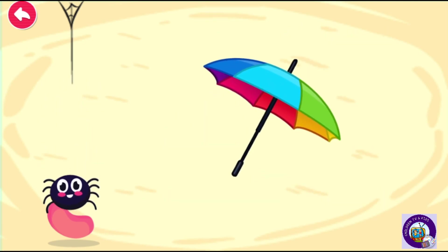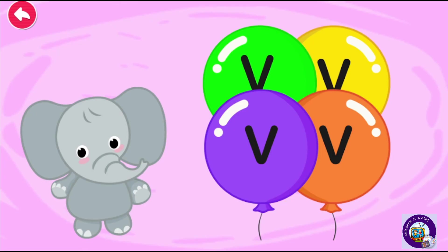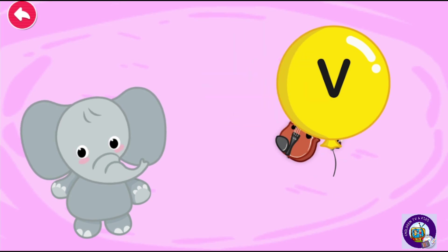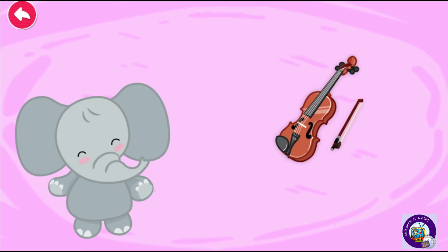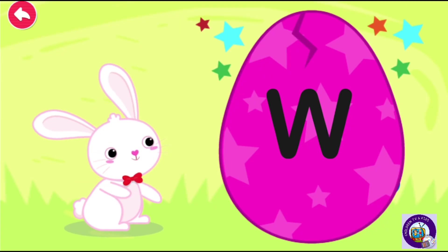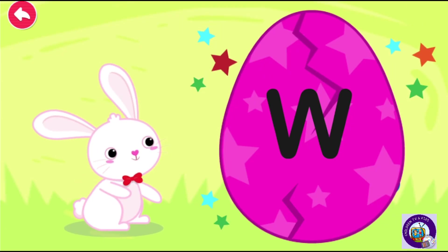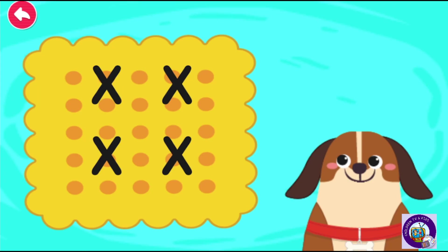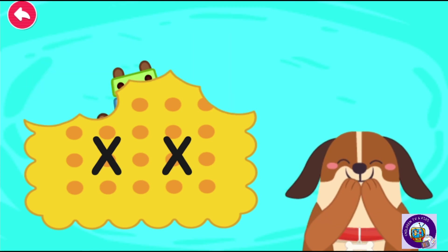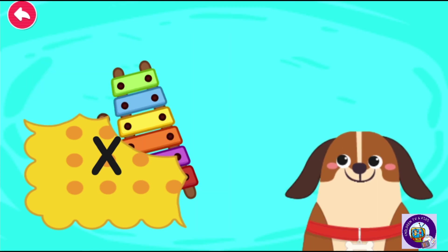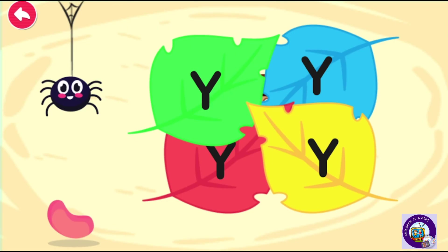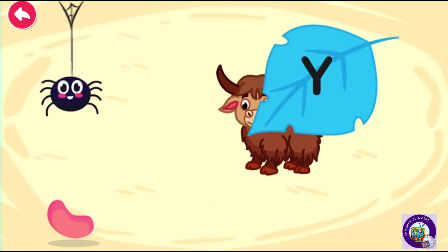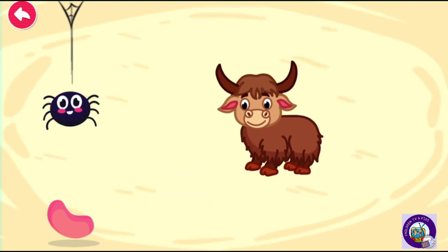U for umbrella. V for violin. W for whale. X for xylophone.